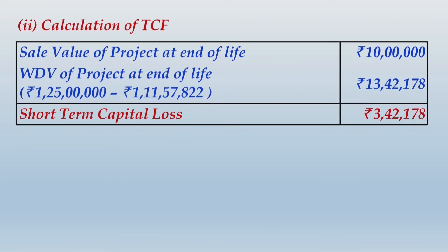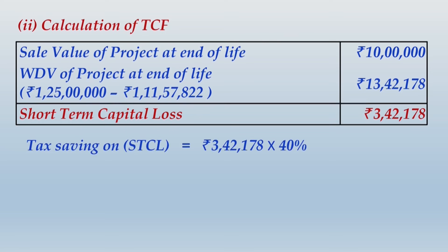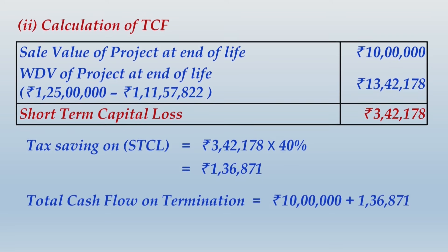Now we compute the terminal cash flow. The working for the terminal cash flow will be exactly the same because at the end of the project life the company would have been an existing and highly profitable company — even if it is newly started now, after 10 years it will not be a newly started company. The treatment of the capital loss arising and the terminal cash flow amount will be exactly the same under this assumption as well. So just write the heading 'Terminal Cash Flow', write the amount directly, and give a reference to the same working done earlier — no need to duplicate the whole calculation.